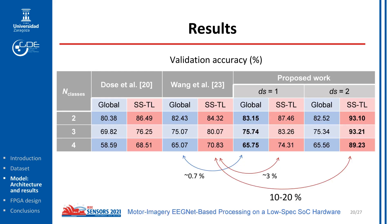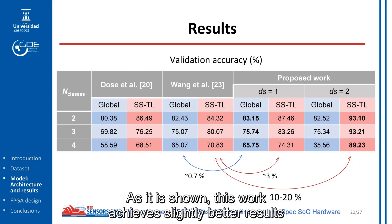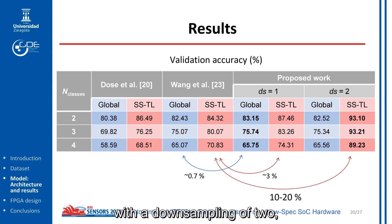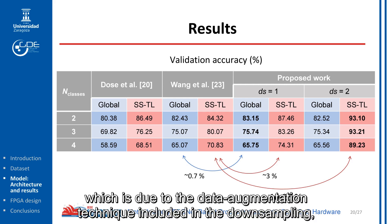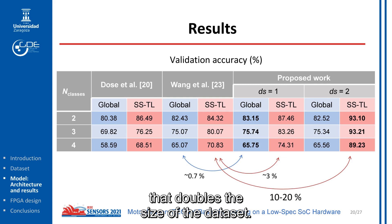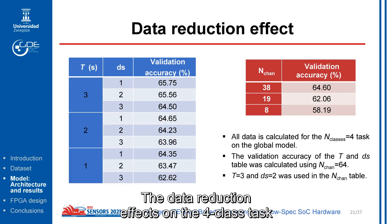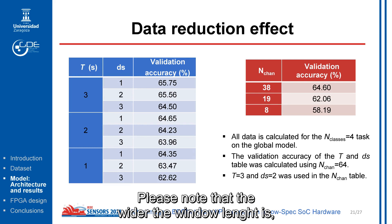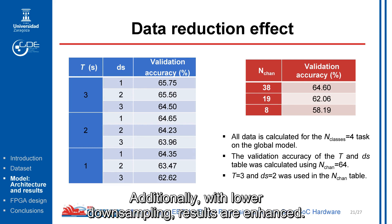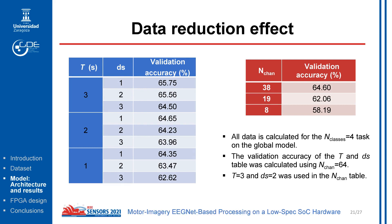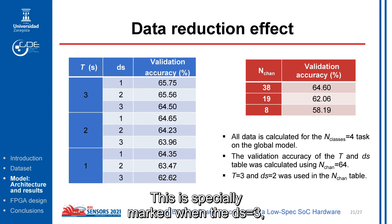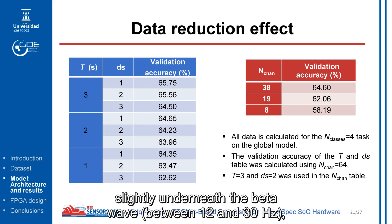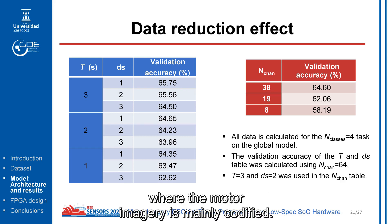These are the main results of the model. As shown, this work achieves slightly better results than the state of the art in the global models, but a big improvement appears in the subject-specific models with a downsampling factor of 2, which is due to the data augmentation technique included in the downsampling that doubles the size of the dataset. The data reduction effects on the four-class task for the global models are shown in this slide. Please note that the wider the window length, the better the performance achieved. Additionally, with lower downsampling, results are enhanced. This is especially marked when the downsampling factor equals 3, where the input bandwidth is 70 Hz, slightly underneath the beta wave range between 12 and 30 Hz, where motor imagery is mainly codified.